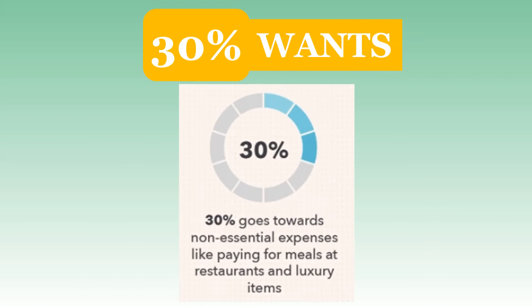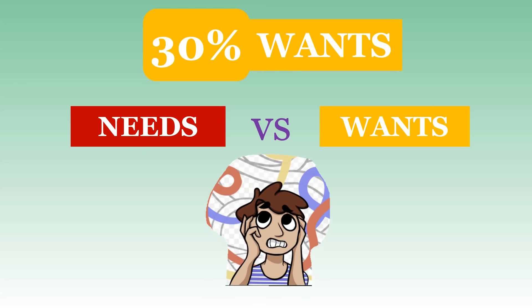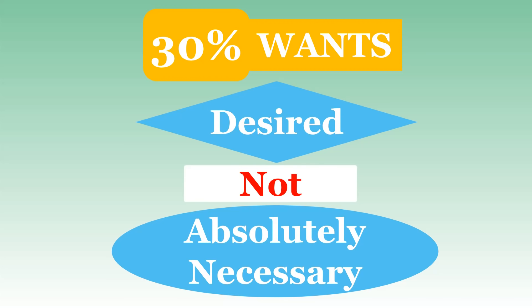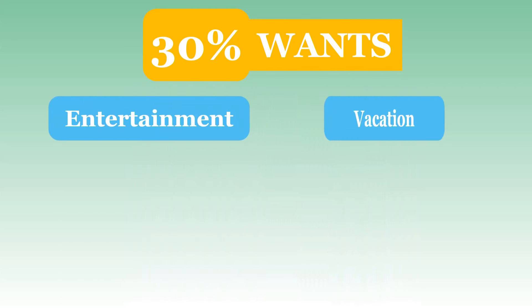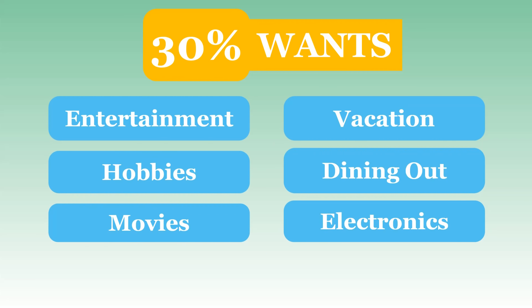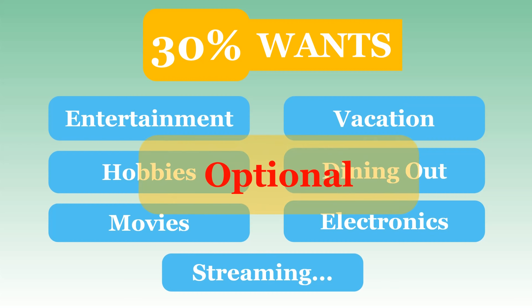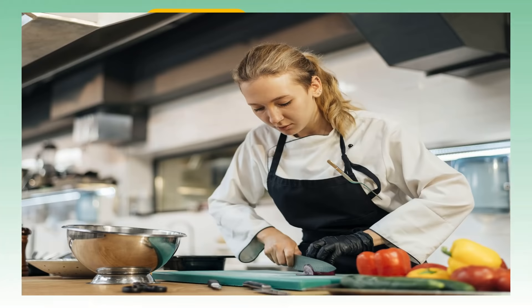30% wants. This is where you spend 30% of your income after taxes. Distinguishing between needs and wants is not always easy. Wants are the things you desire but don't actually need to survive — all the things you spend money on that are not absolutely necessary; they just make life more enjoyable and entertaining. This includes entertainment, vacations, hobbies, dining out, movies, electronic gadgets, and streaming services like Netflix and Hulu. Anything in the wants category is optional. For example, you can work out at home instead of going to the gym, or cook instead of dining out.